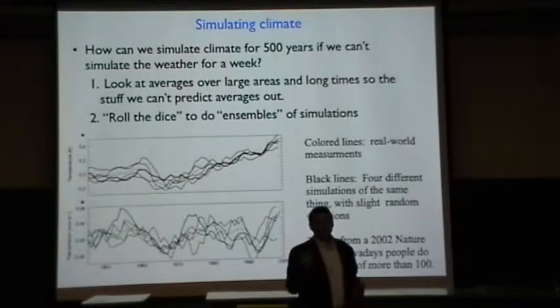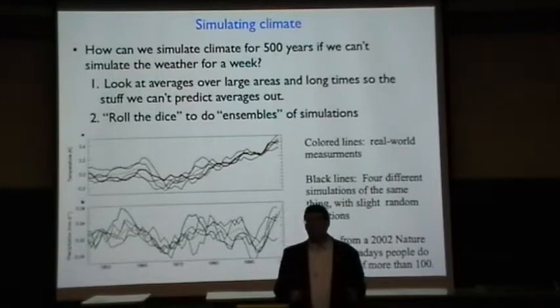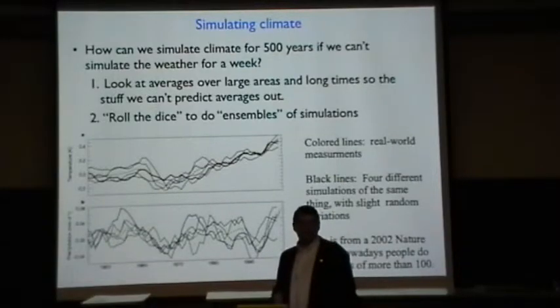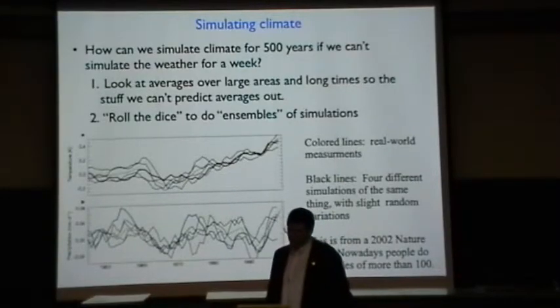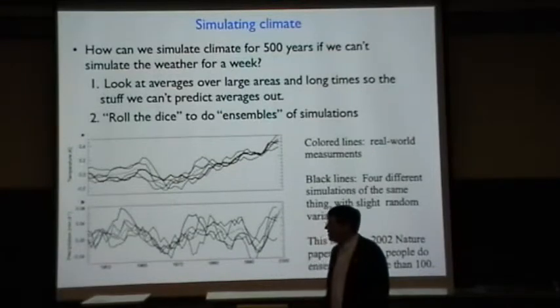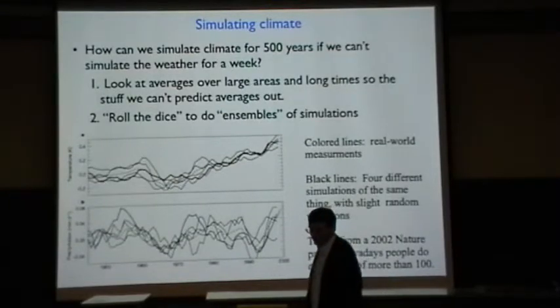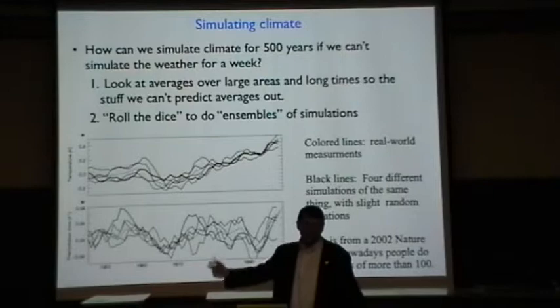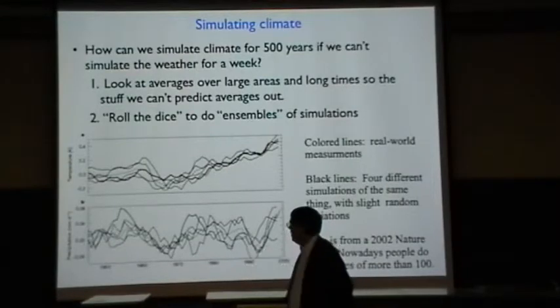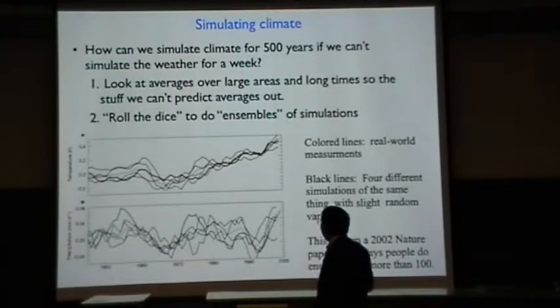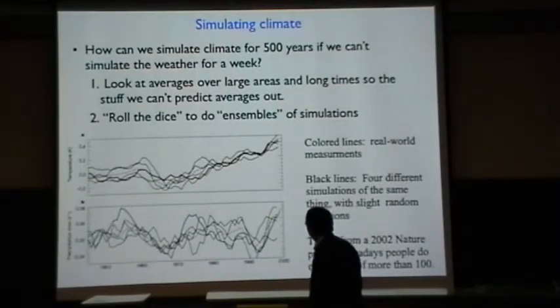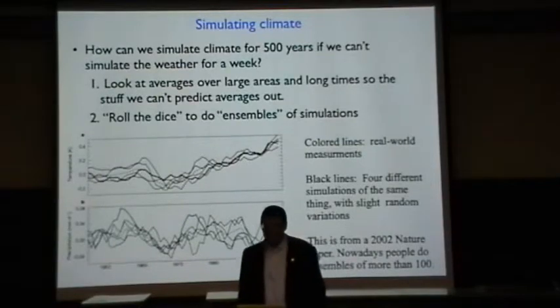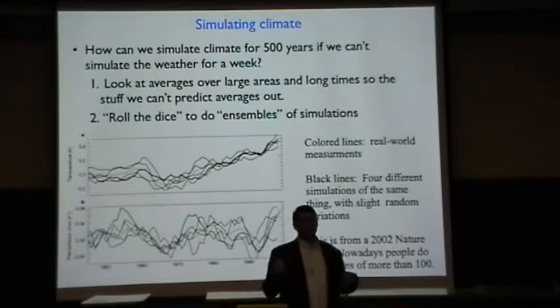So how do we get around this problem that we can't simulate the weather for a month, but we'd like to simulate the climate for 500 years? Well, one of the things that you can do is you don't try to ask the question about whether it's going to rain in the year 3000 at a particular point, at a particular time. You can look at averages over large areas and long times, and so the stuff that we can't predict averages out.